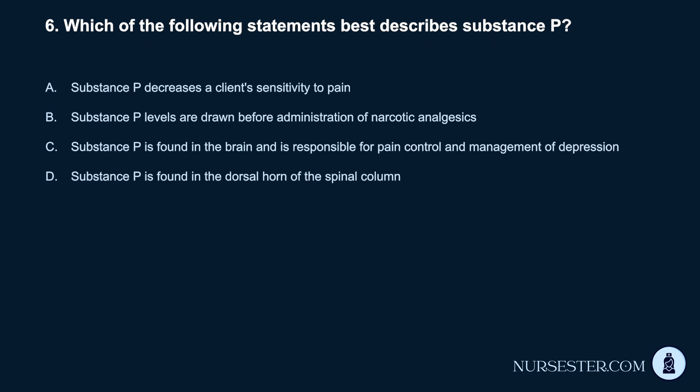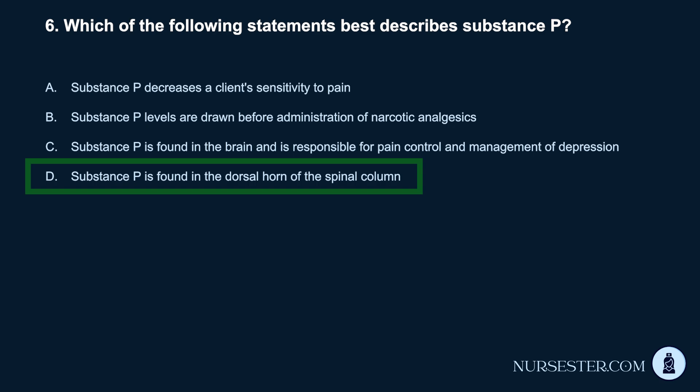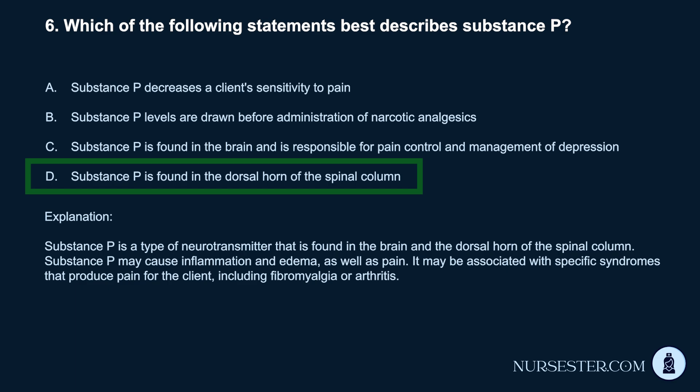Question 6. Which of the following statements best describes Substance P? a. Substance P decreases a client's sensitivity to pain. b. Substance P levels are drawn before administration of narcotic analgesics. c. Substance P is found in the brain and is responsible for pain control and management of depression. d. Substance P is found in the dorsal horn of the spinal column. Correct answer: d. Substance P is a type of neurotransmitter found in the brain and the dorsal horn of the spinal column. It may cause inflammation, edema, and pain, and may be associated with specific syndromes such as fibromyalgia or arthritis.